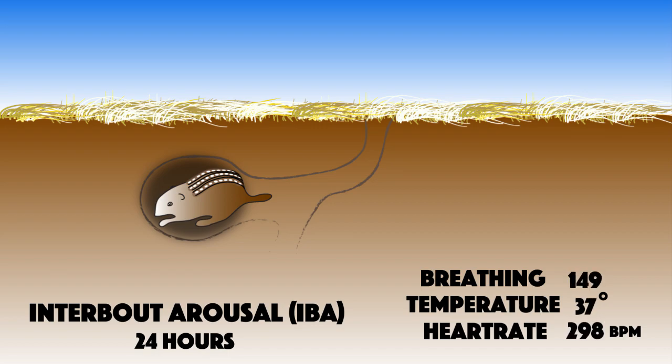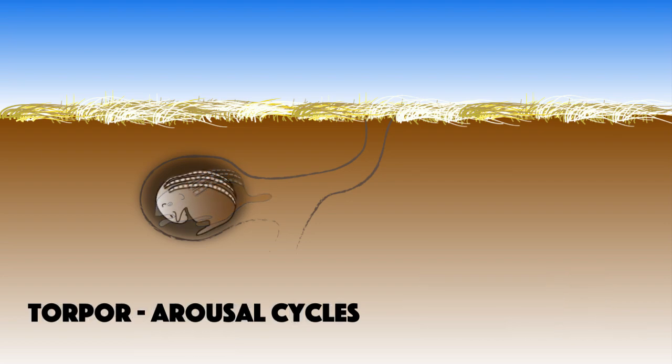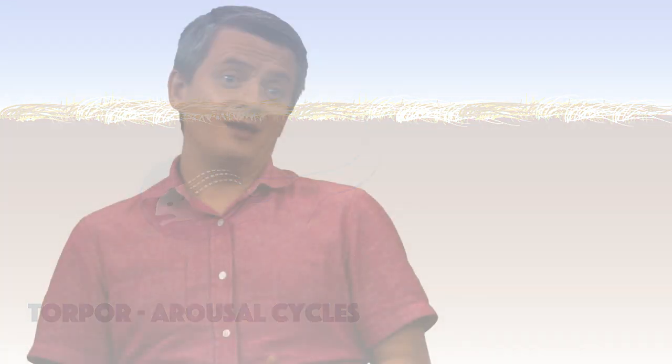During IBA, they warm back up to 37 degrees for just 24 hours and then go back to torpor again. Now they repeat this torpor IBA cycle over and over again throughout the entire period of hibernation until they arouse from it and become active again in spring.